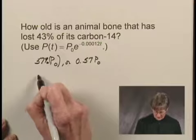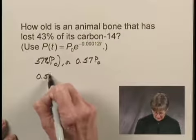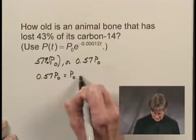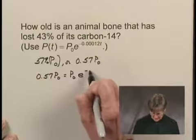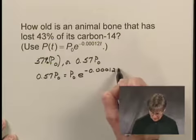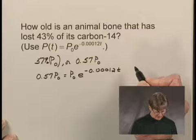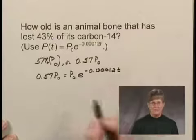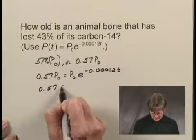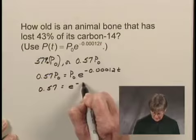We have 0.57P₀ = P₀e^(-0.00012t). T is what we're trying to find. Now I'm going to divide both sides by P₀, and I'll have 0.57 = e^(-0.00012t).